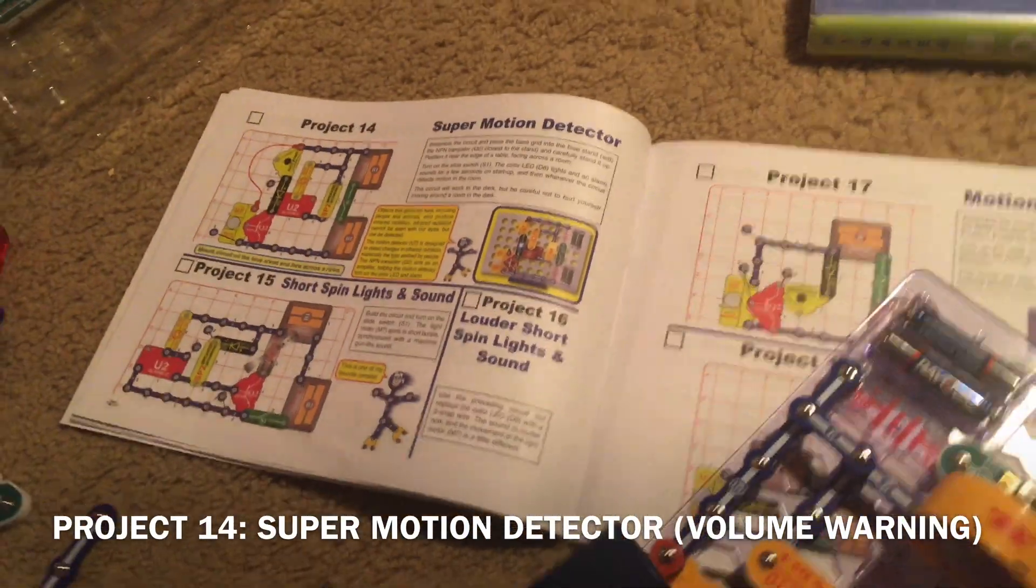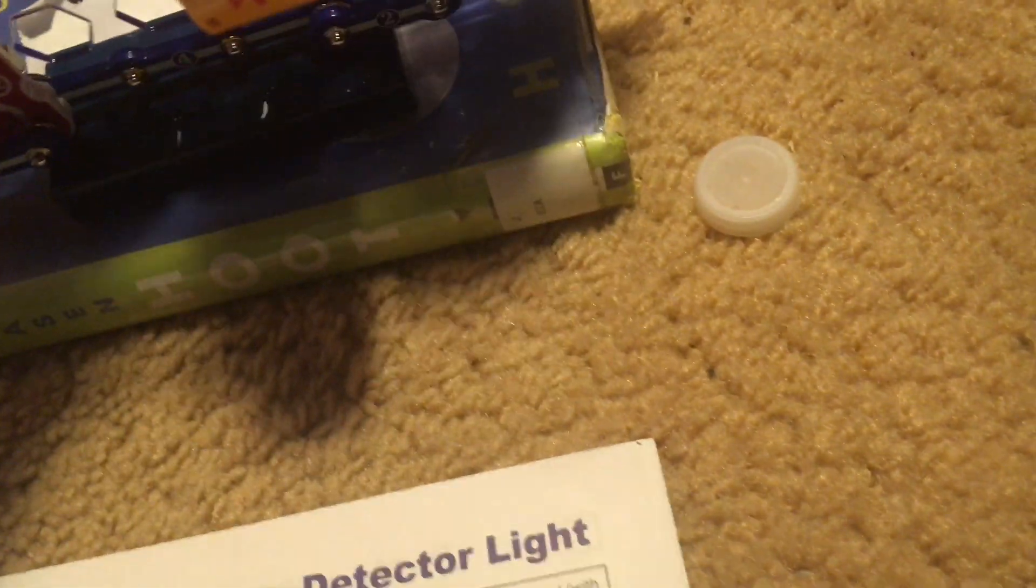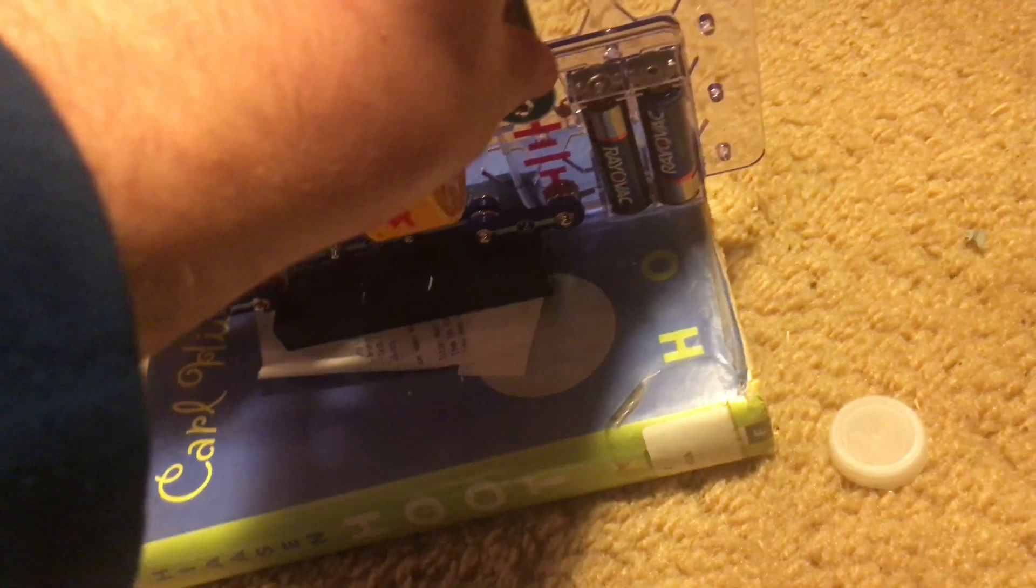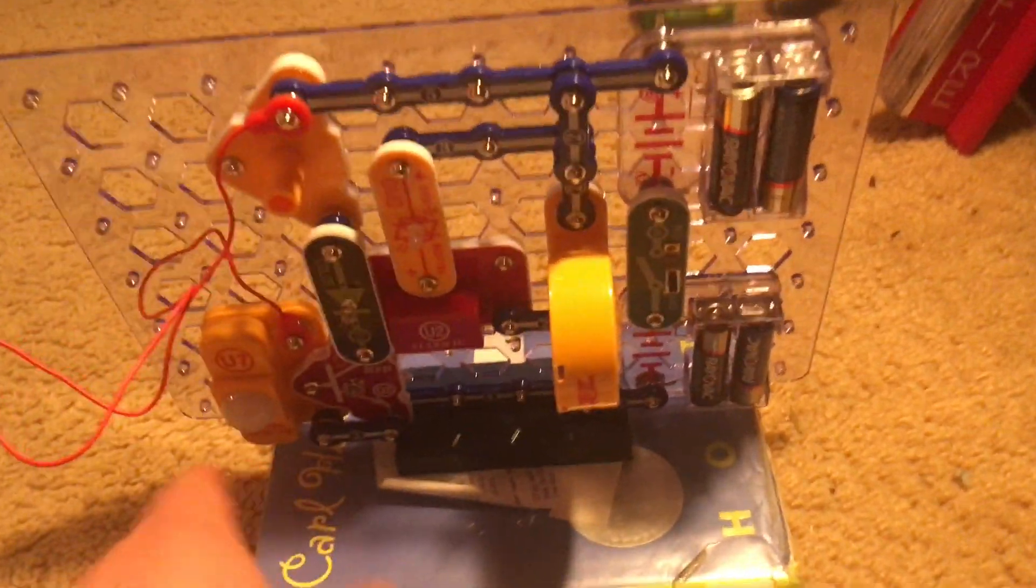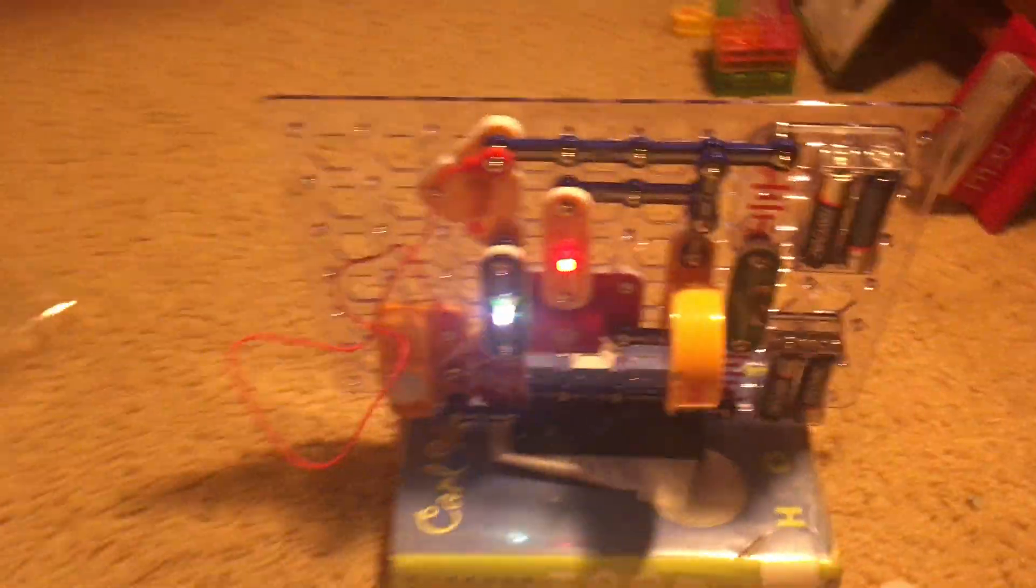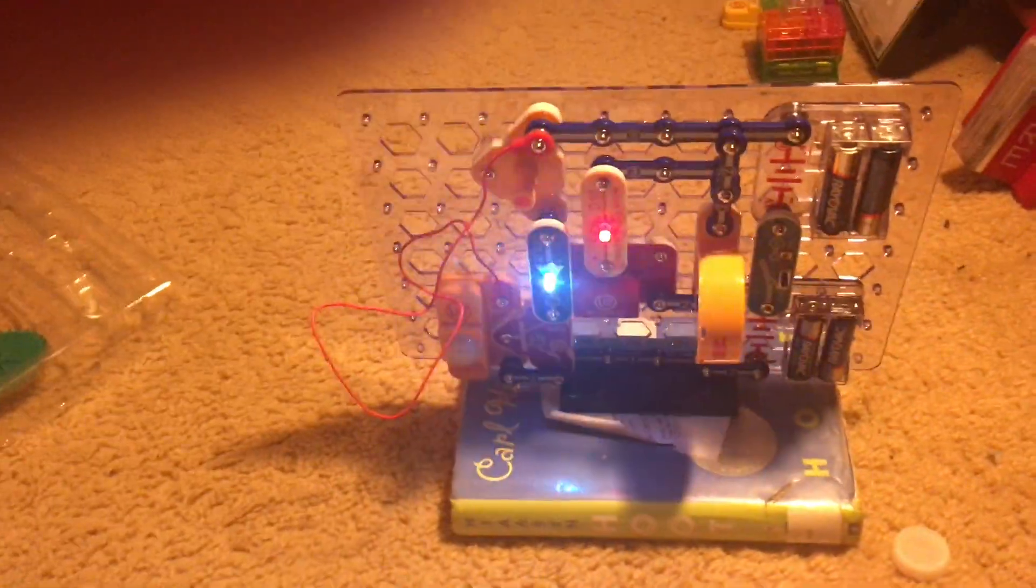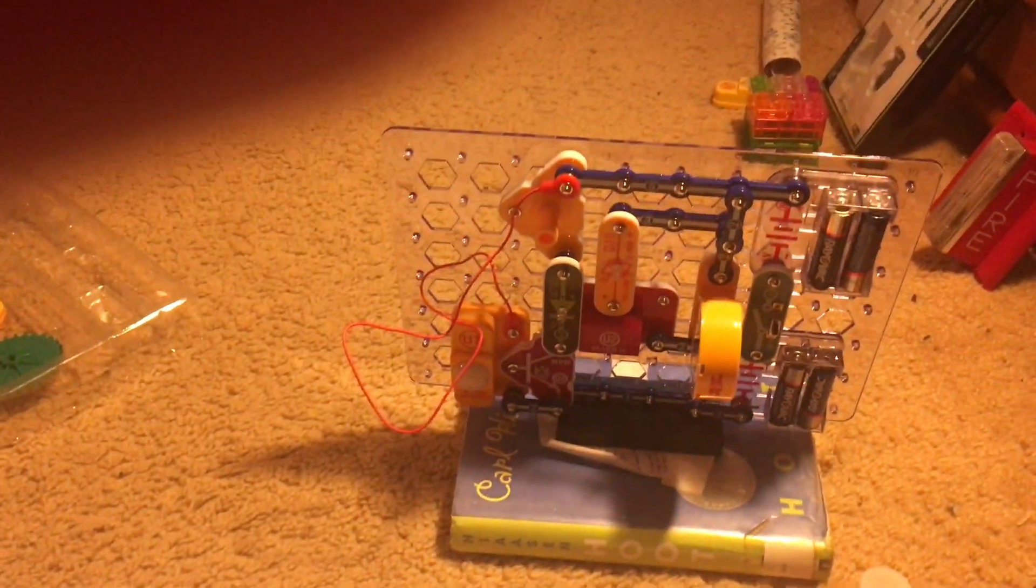I'm going to mount this circuit on the blue stand that is included in this set. Make sure it's fairly stable. It's not perfect but it should stay up. I'm going to turn on the slide switch. Volume warning. Now when the circuit detects motion, a siren will sound and the two LEDs will come on. It might be a little bit tricky to activate it, but there it goes. As long as motion is detected, an alarm will sound and the LEDs will come on.